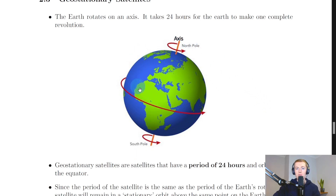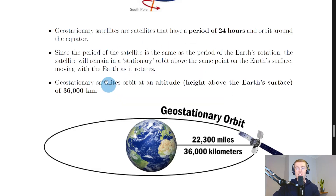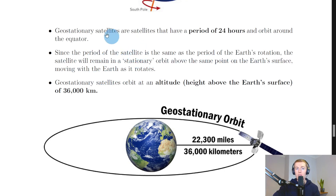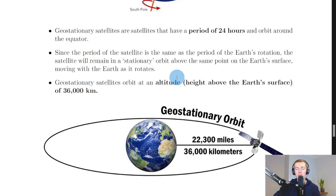Geostationary satellites are satellites that have a period of 24 hours and orbit around the equator. Since the period of the satellite is the same as the period of the earth's rotation — meaning the time taken for the satellite to go around the earth once equals the time for the earth to spin once on its axis — the satellite will remain in a stationary orbit above the same point on the earth's surface, moving with the earth as it rotates.